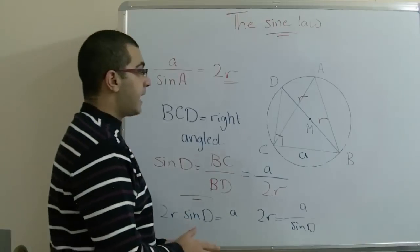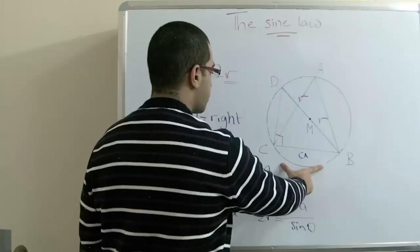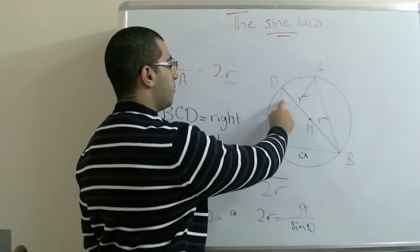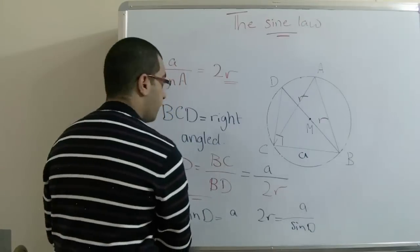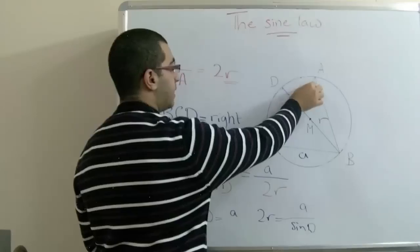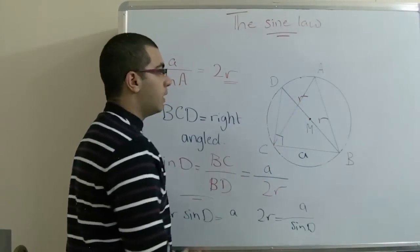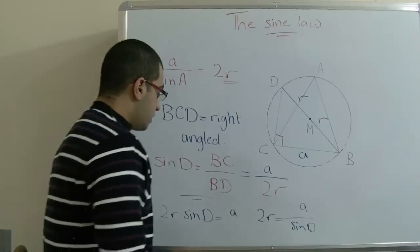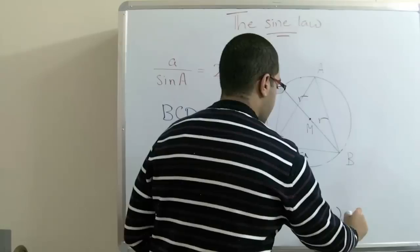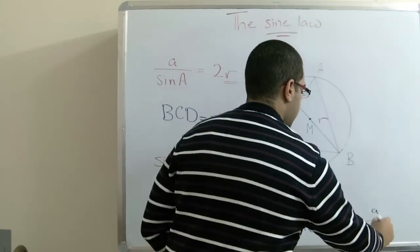Finally, because those two angles are both inscribed by the same arc, they are equal in measure — in the circle they subtend the same arc, as if one angle is translated into the other. So they are both equal in measure. Therefore, we can write 2R equals a over sine A.